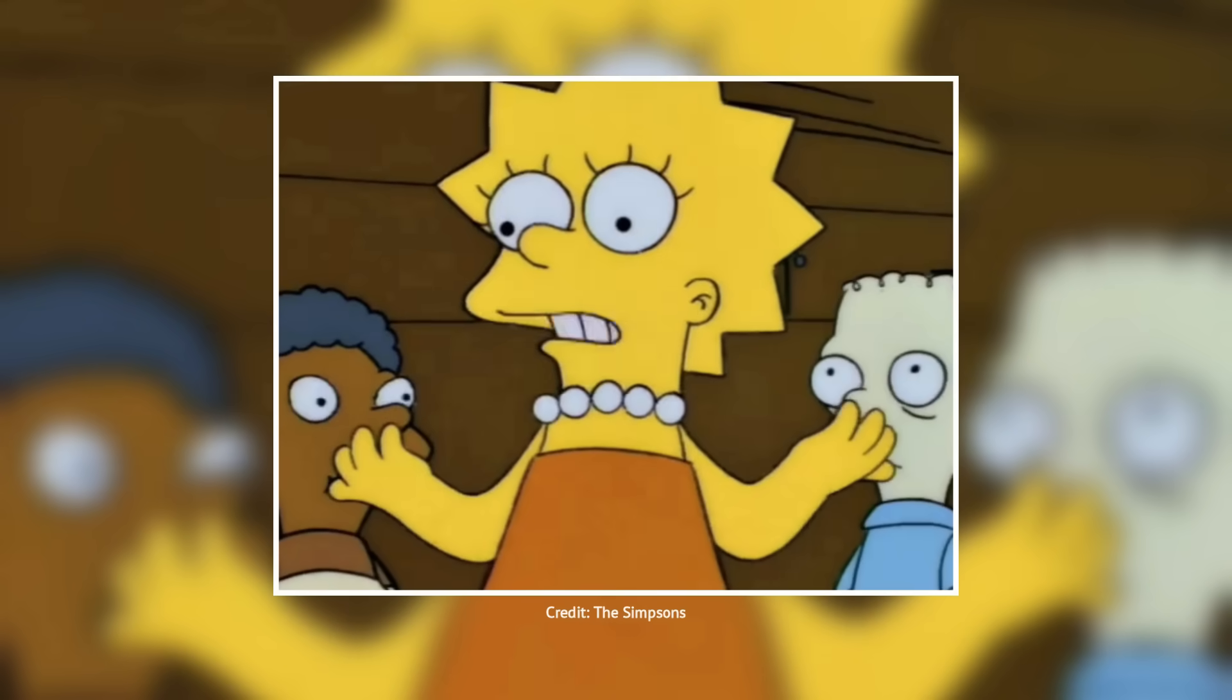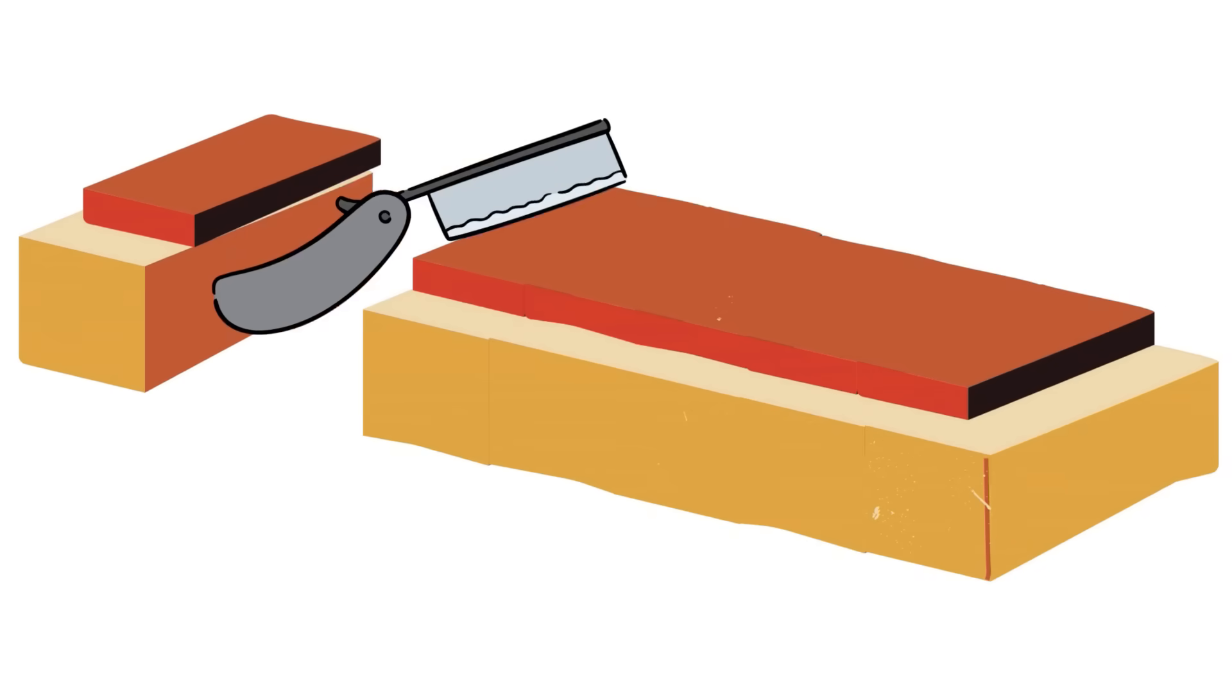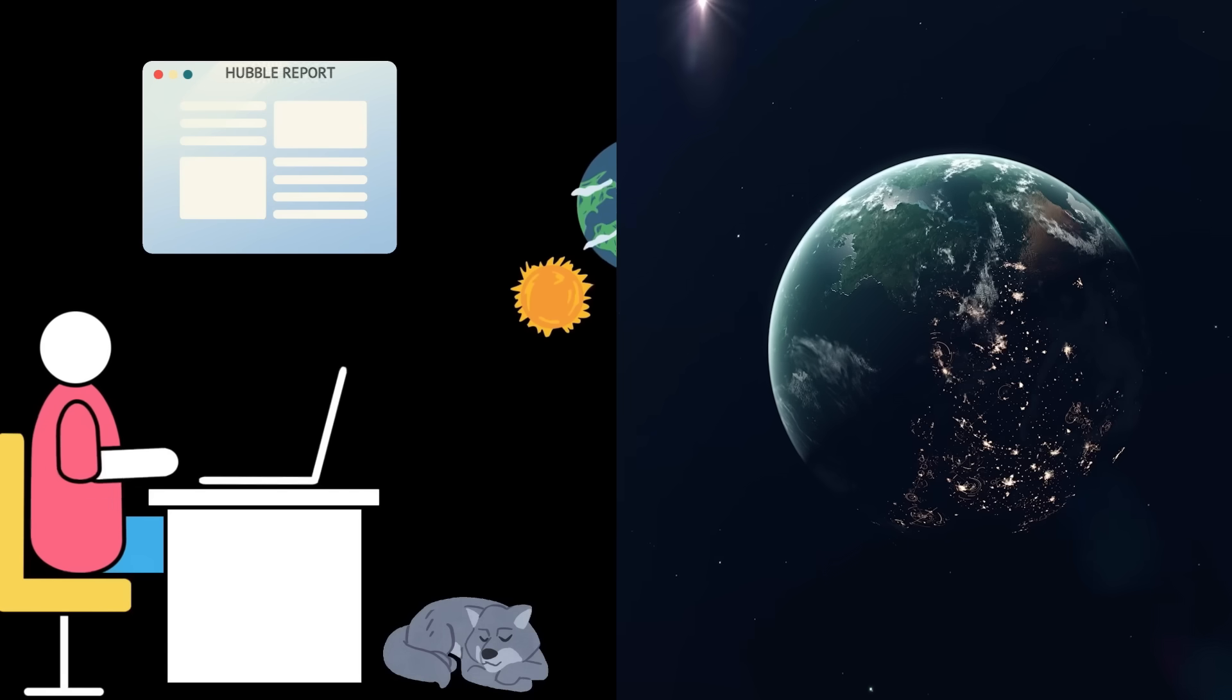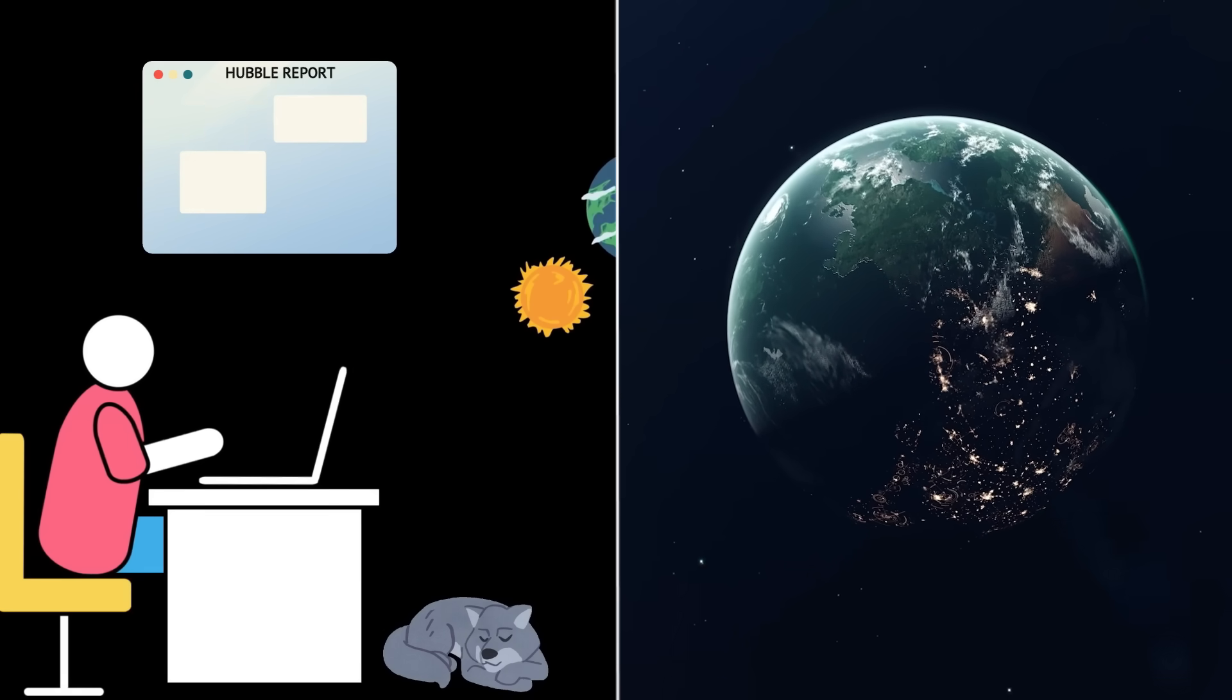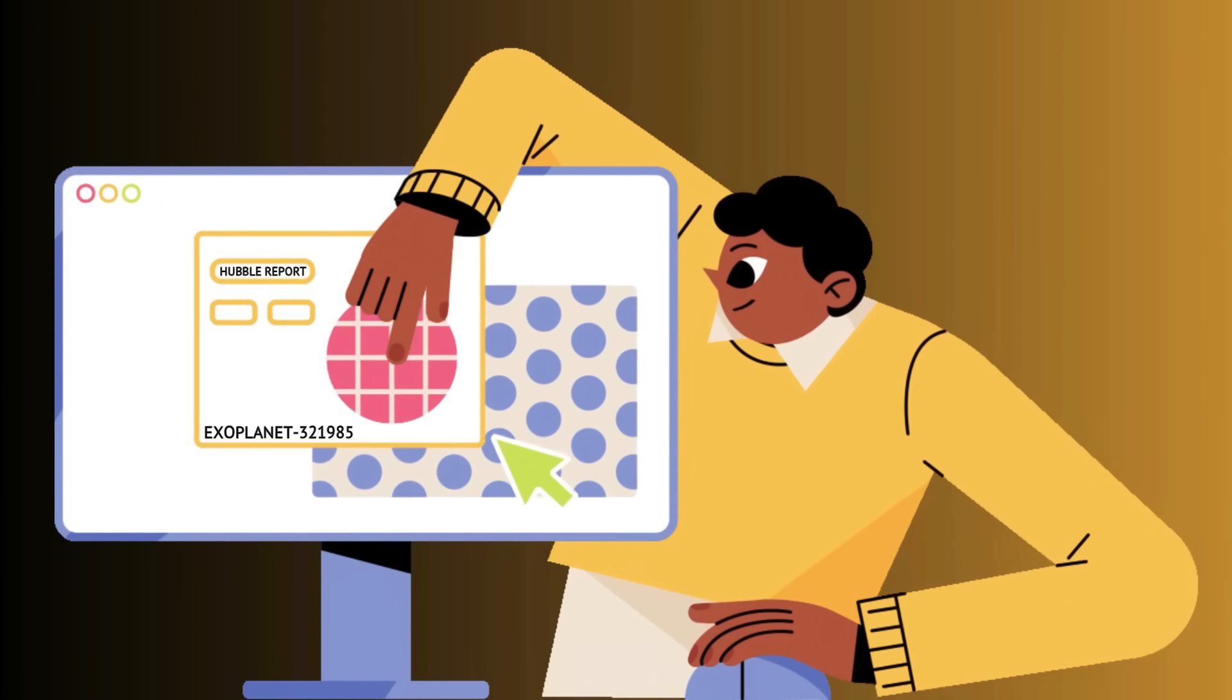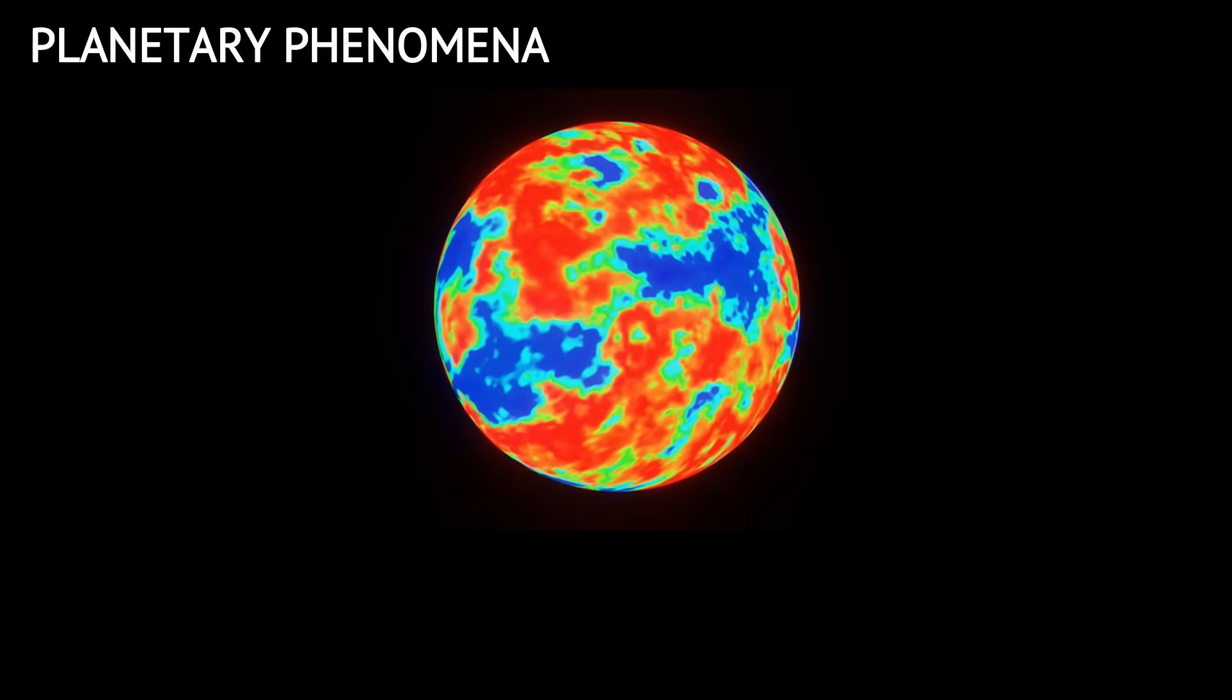But what if the answer lies not in our universe, but another? Haven't you ever heard of Occam's Razor? The simplest explanation is probably the correct one. In the world of scientific reasoning, there's an effective principle known as Occam's Razor. Let's suppose astronomers observe unexplained lights on another planet. Instead of concluding aliens are there, Occam's Razor proposes to consider simpler causes first, like atmospheric conditions or natural planetary phenomena.